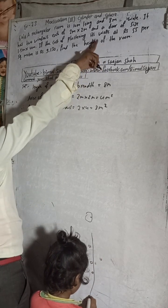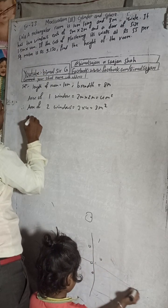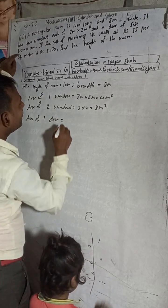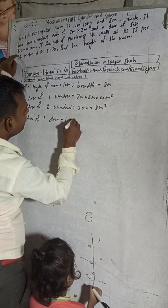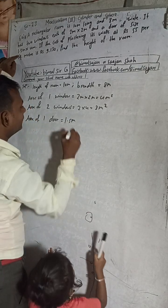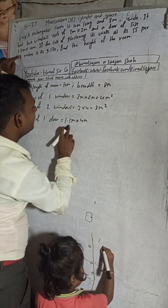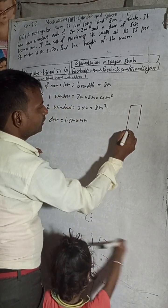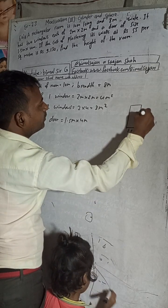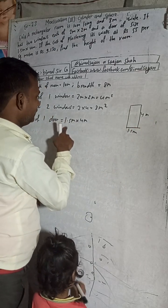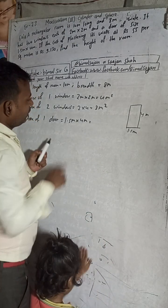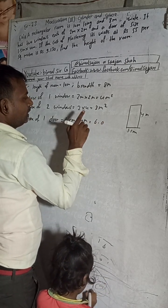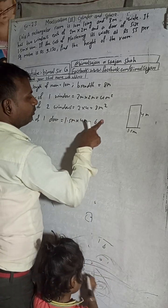There is one door. Area of one door equals length into breadth. The door dimensions are 1.5 meters by 4 meters — the width is 1.5 meters because the door is narrower in that direction, and the height is 4 meters. So 1.5 × 4 = 6 square meters. Area of one door equals 6 square meters.